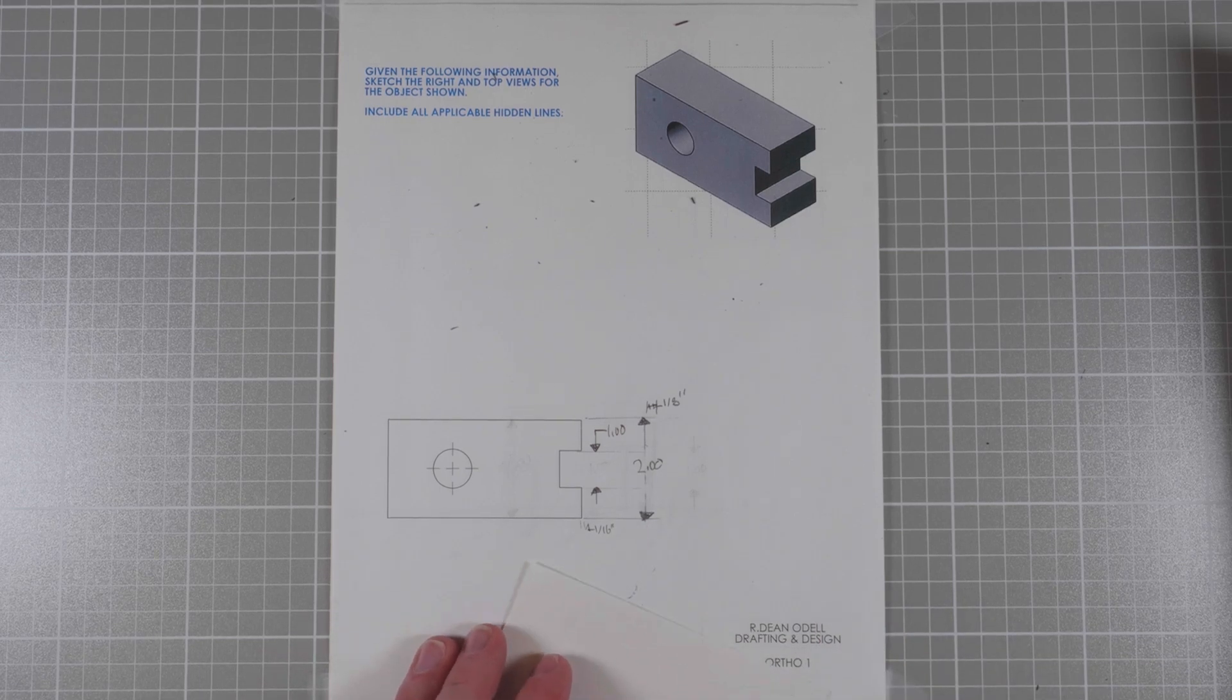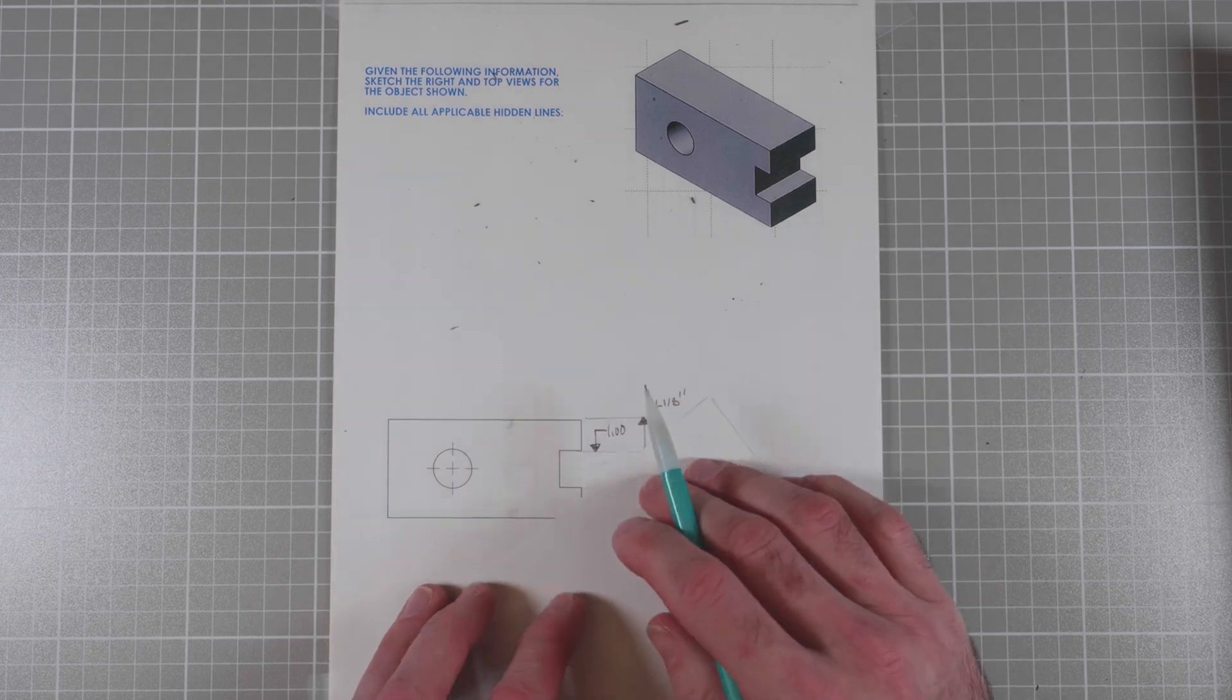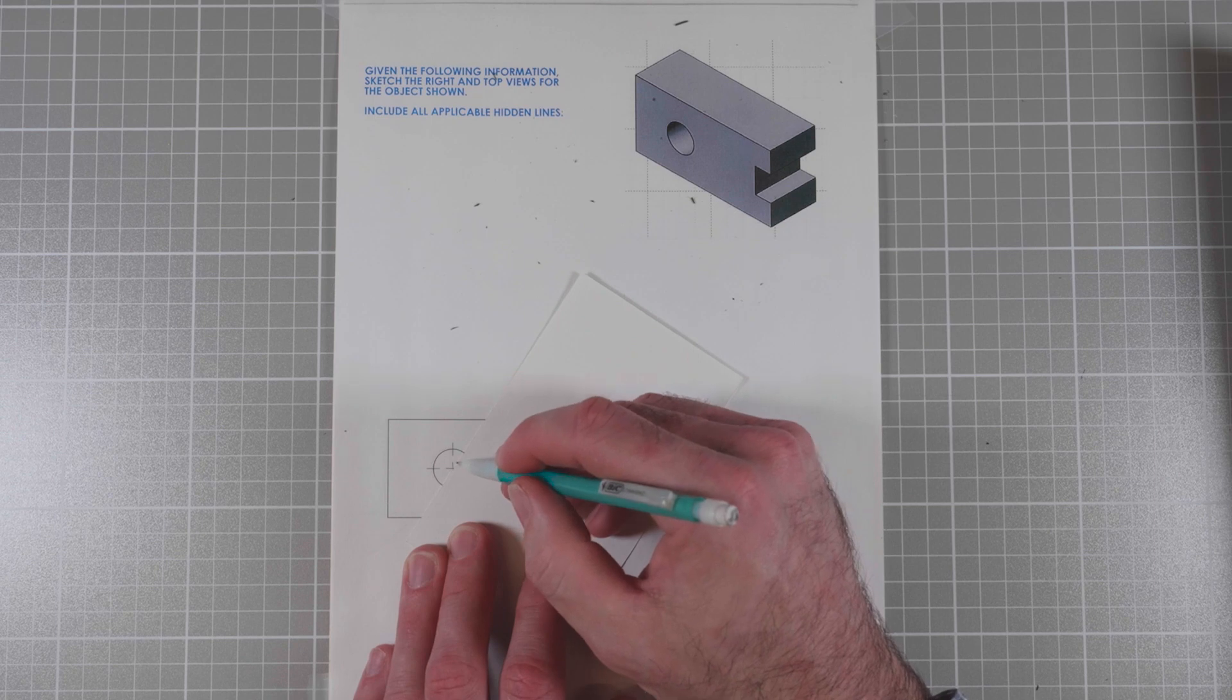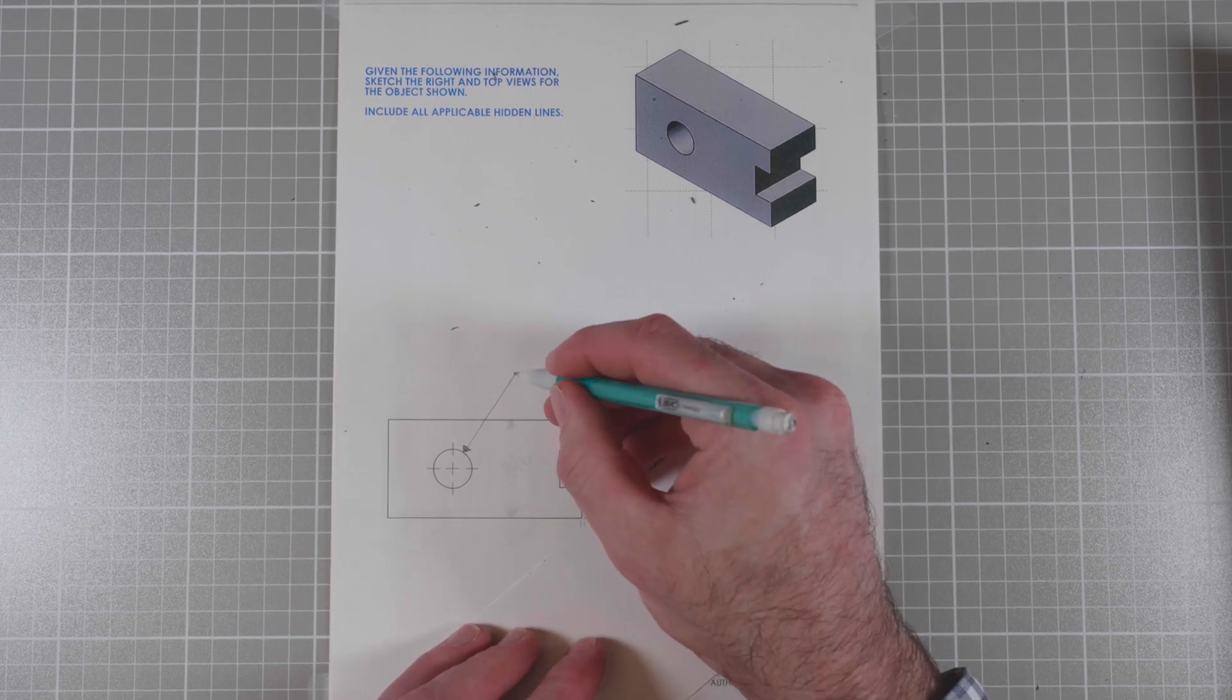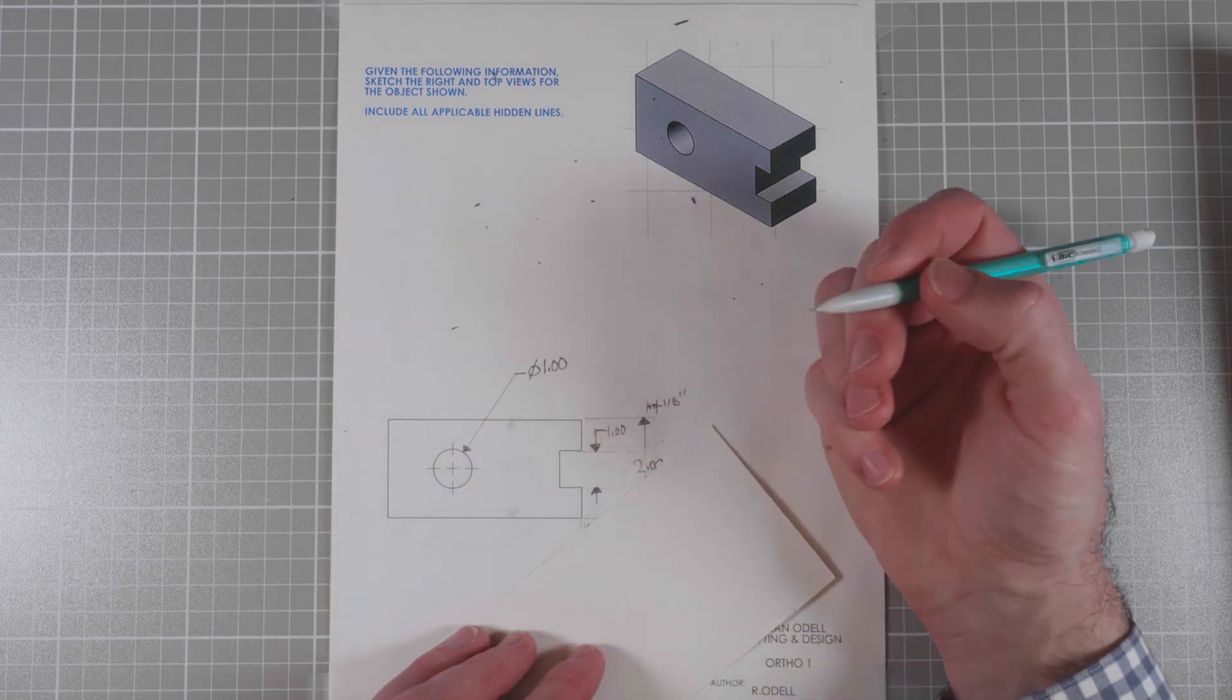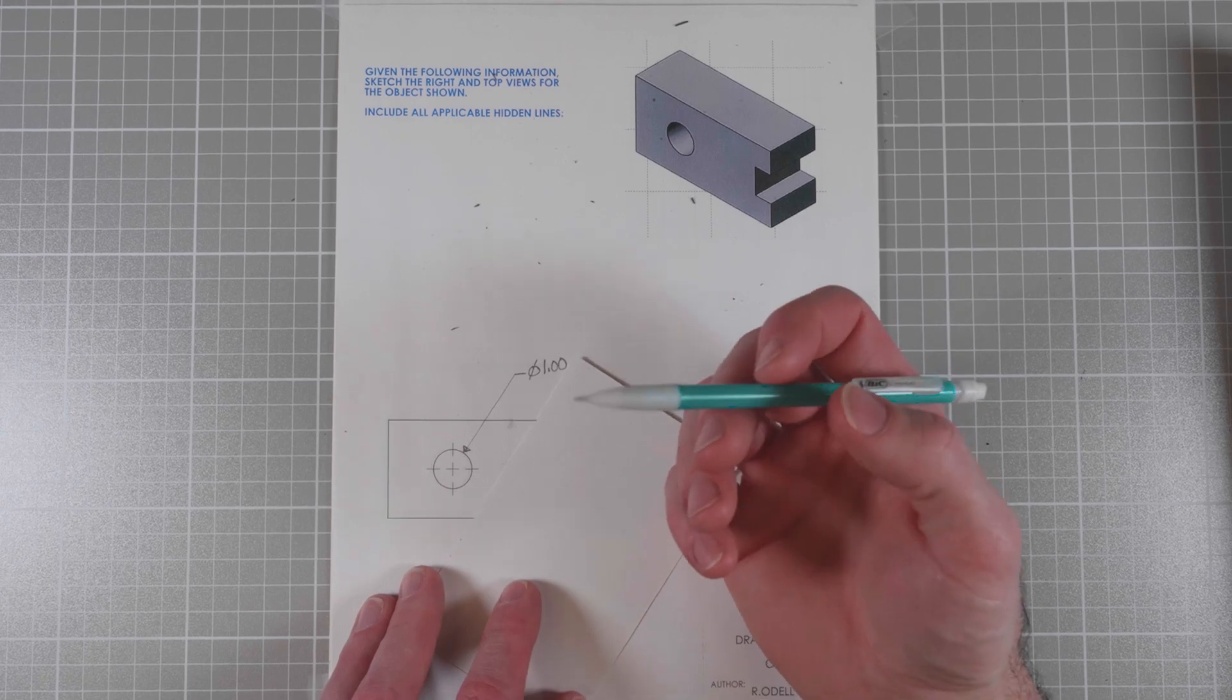The last type of line we'll talk about is the leader line. We need a leader for this hole. If we put the dimension inside of here, we'd run out of room very quickly. The way a leader works, if you notice this index card, I'm going to line it up with the center of the circle, but I'm not going to draw a line all the way through it. I'll come out here, have a short horizontal shoulder here, about a quarter of an inch, diameter symbol, and then dimension. It's important that the leader points to the center of the circle, or it looks funny if it comes at it from a weird angle.